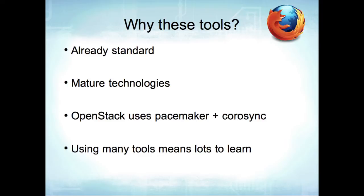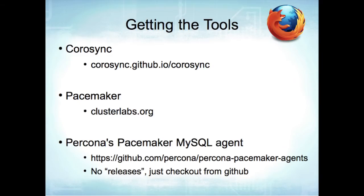Why use these tools rather than making their own? They're already standard, already being used, and have a good track record. Also, never underestimate the power of somebody else developing something — Percona only had to develop the agent itself, not the rest of the framework. Pacemaker has been around since at least the early 2000s. OpenStack, for example, uses the combination of Pacemaker and Corosync, and if it's good enough for OpenStack it's probably good enough for us.